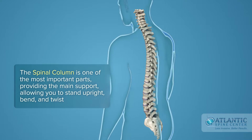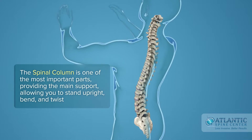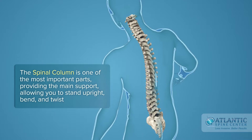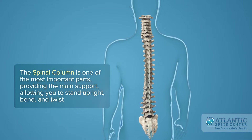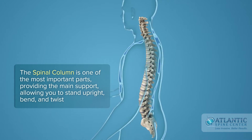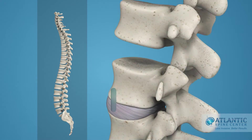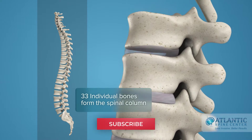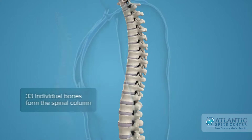The spinal column or backbone is one of the most important parts of your body. It provides the main support, allowing you to stand upright, bend and twist. 33 individual bones interlock with each other to form the spinal column.